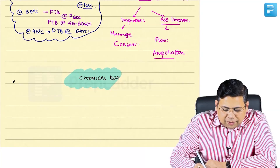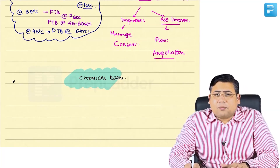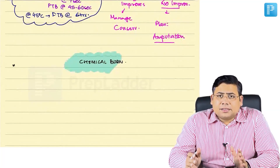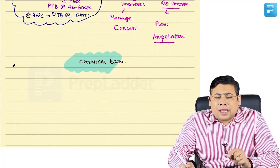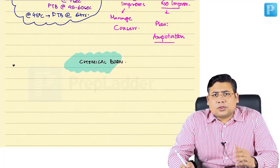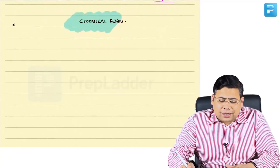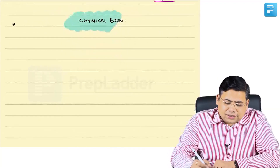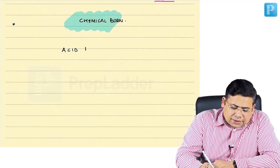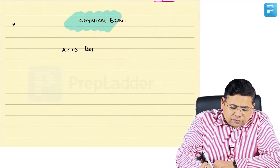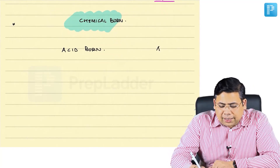When we talk about chemical burns, the first important challenge is what has been associated with the burn — was it alkali or was it acid? Chemical burns can be acid burns, but they could also be alkali burns.